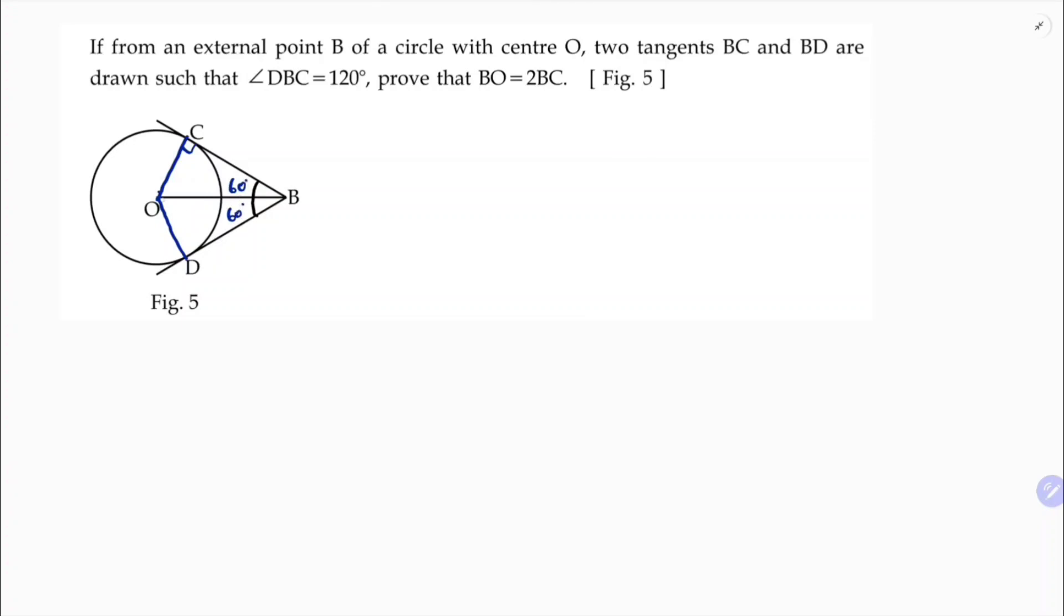A line joining from the center to the external point bisects this angle between the tangents. Now BO equals 2BC.